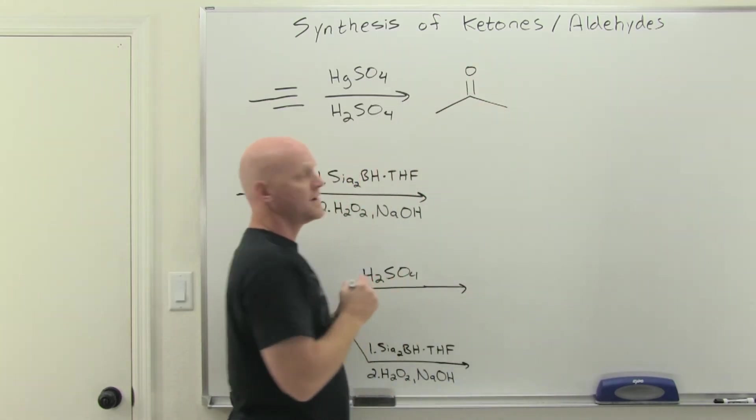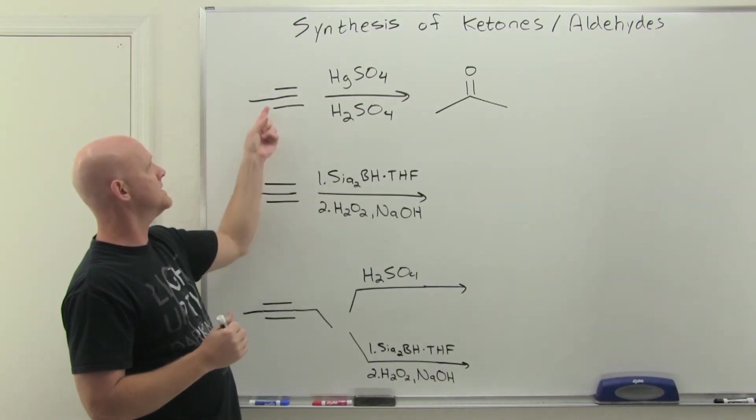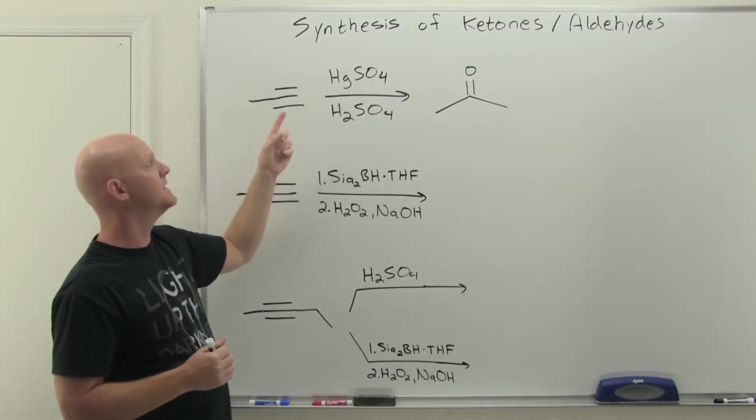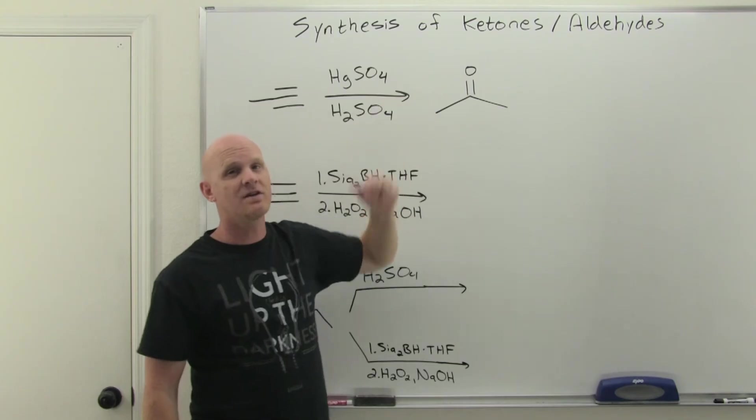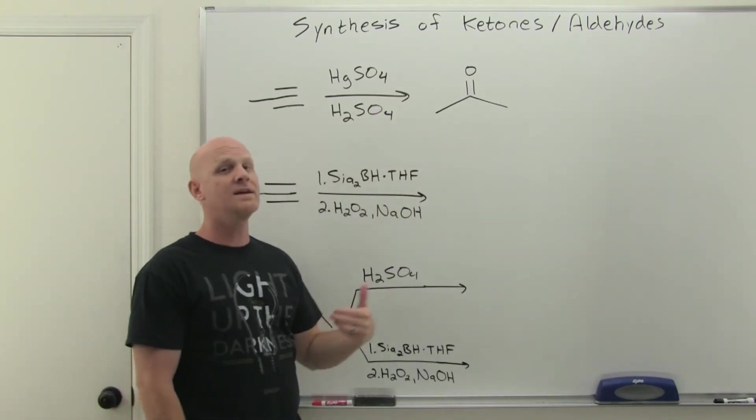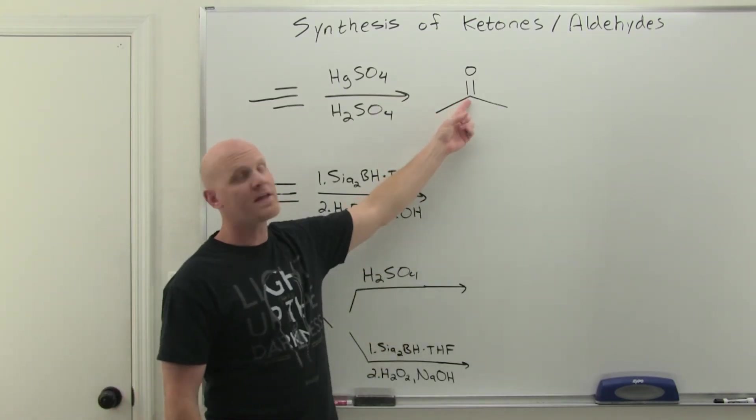You initially form an enol, but that tautomerizes to the ketone. So if you look at your two carbons, it's the internal one, not the terminal one. The more substituted one that's going to end up with the oxygen. Instead of being an enol, an alcohol at that carbon, it's going to tautomerize to a ketone at that carbon instead.